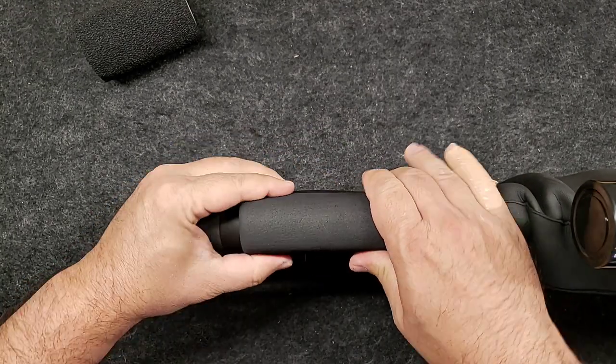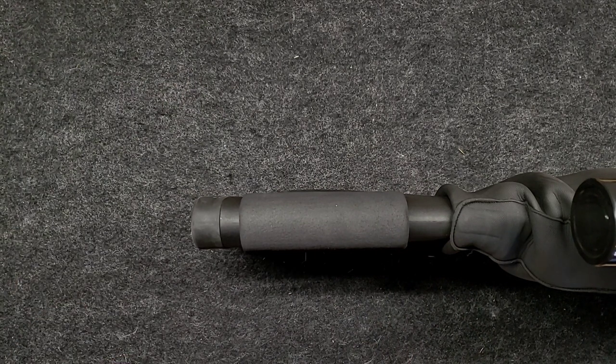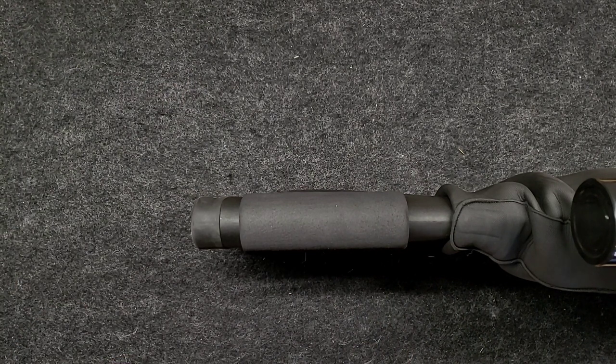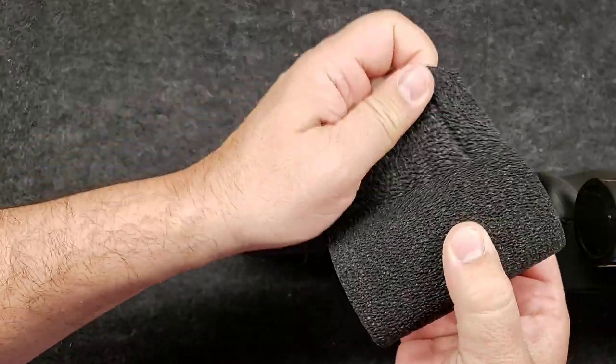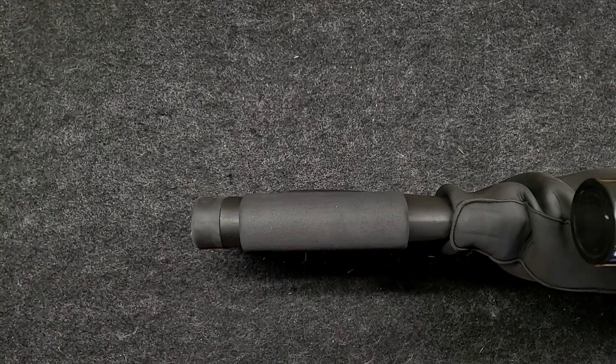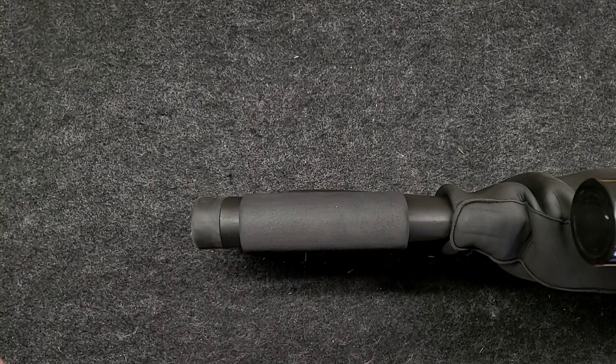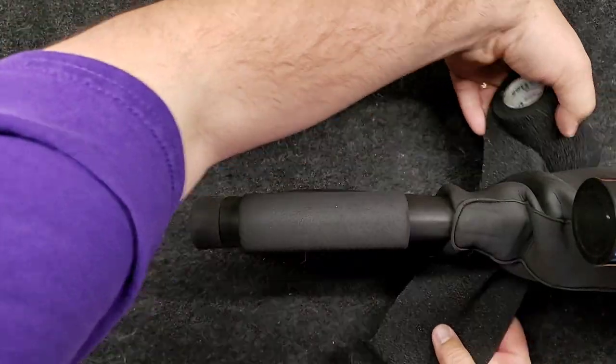That's where the cheek rest needs to be. I want to make sure it's in line and straight up and down, and then all we're going to do is wrap this around the buttstock. It sticks to itself pretty good, so I'm just going to get this started.